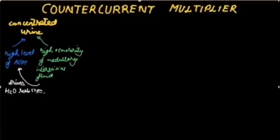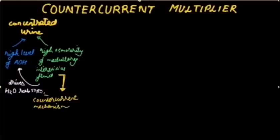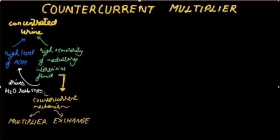This solute concentration is created by the counter current multiplier system of the loop of Henle. The counter current mechanism — which includes the counter current multiplier system and the counter current exchange system of the Vasa Recta — prevents this high solute concentration from being lost. Without the counter current exchange, all the solutes would be washed away in the blood flow.